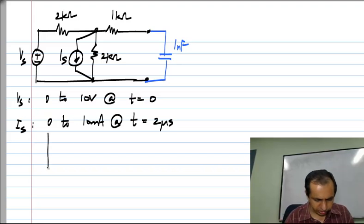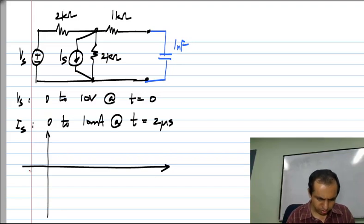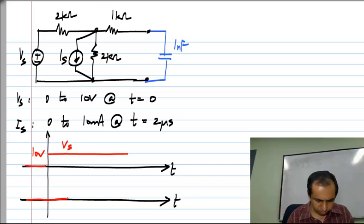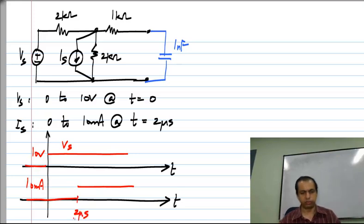So if I had to sketch these, this would be Vs, the x axis is of course time and the y axis is either voltage or current and Is would go from 0 to 10 milliamps at t equals 2 microseconds.